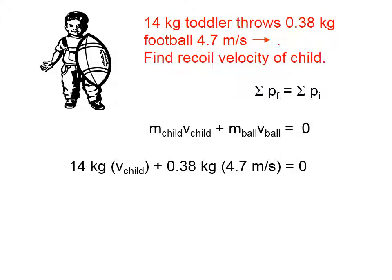Let's put in what we have. The right side is zero. The mass of the child is 14. The velocity of the child we don't have. We do have the mass of the ball and the velocity of the ball. If we solve this for the velocity of the child, our calculator will say negative 0.13 meters per second.